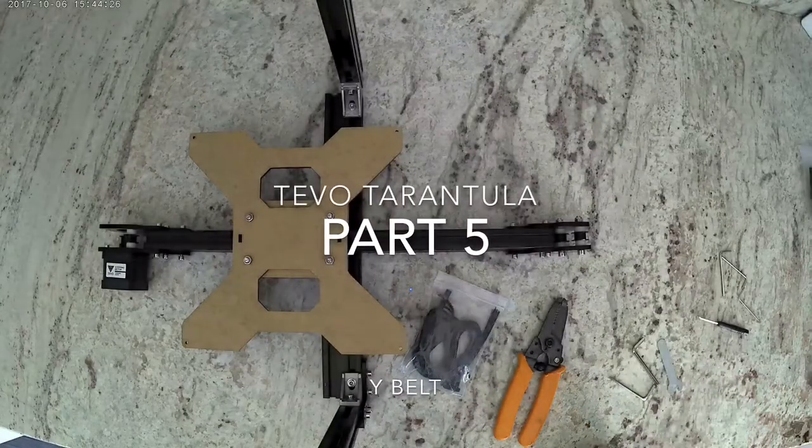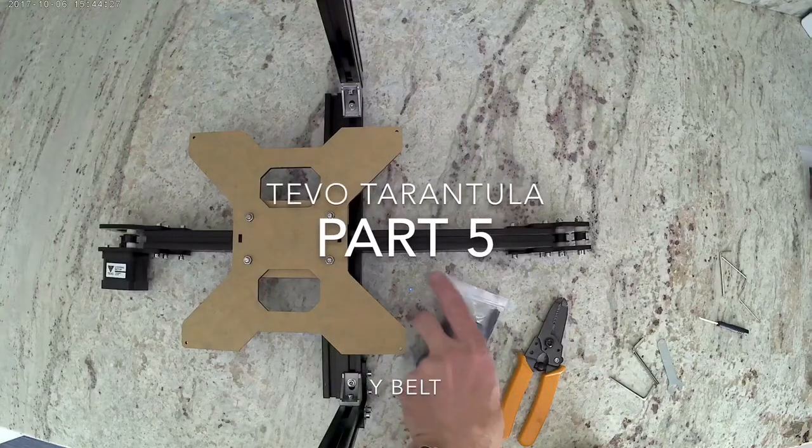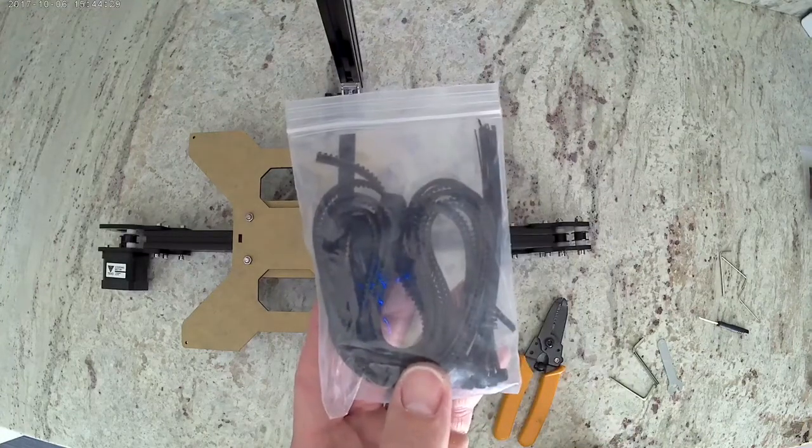This is Colin with Maker Farm. This is part 5 of the TiVo Tarantula build. In this section we're going to install the Y belt, so go ahead and grab your bag with the belt and zip ties.